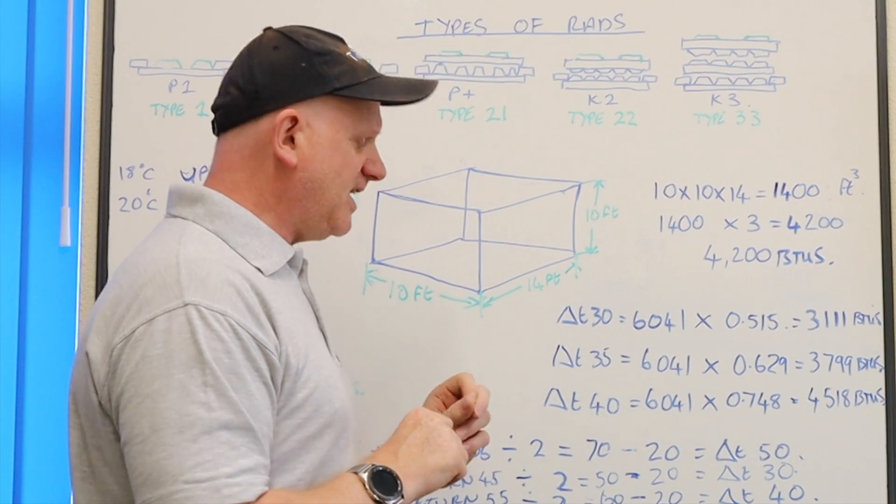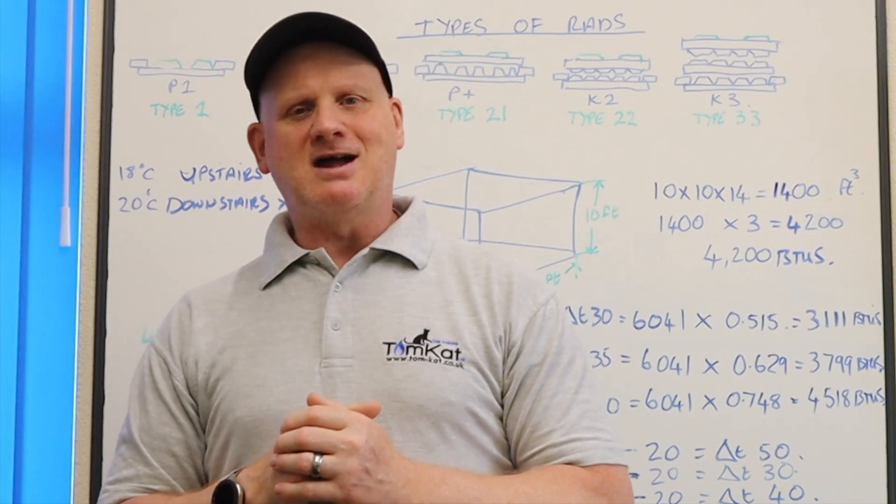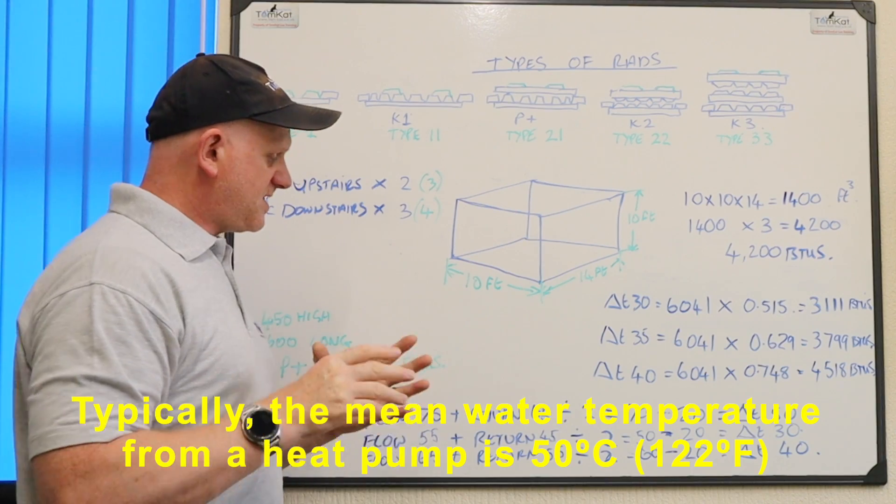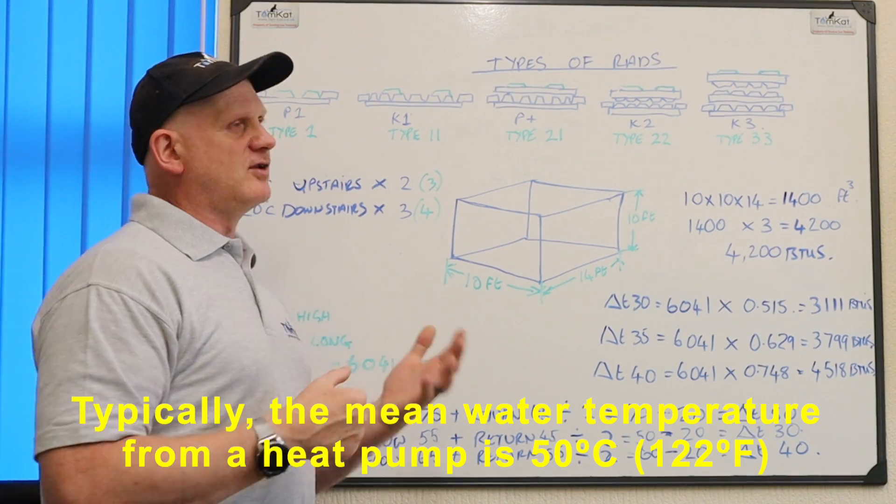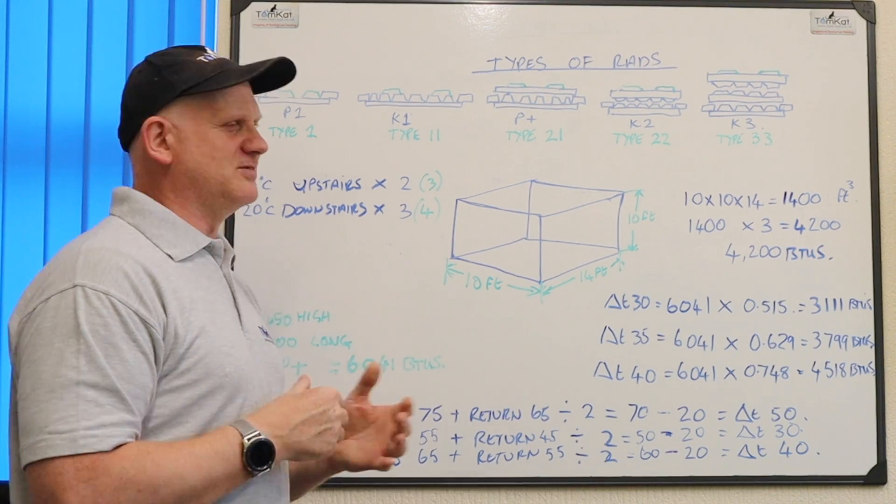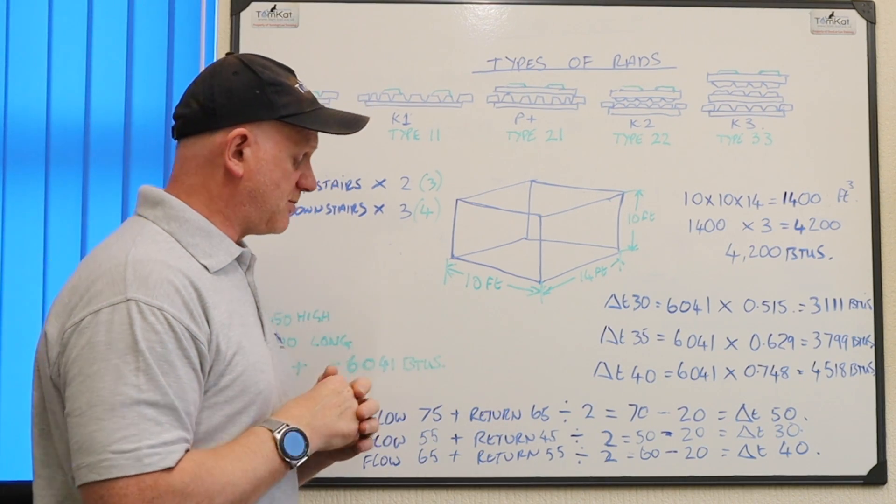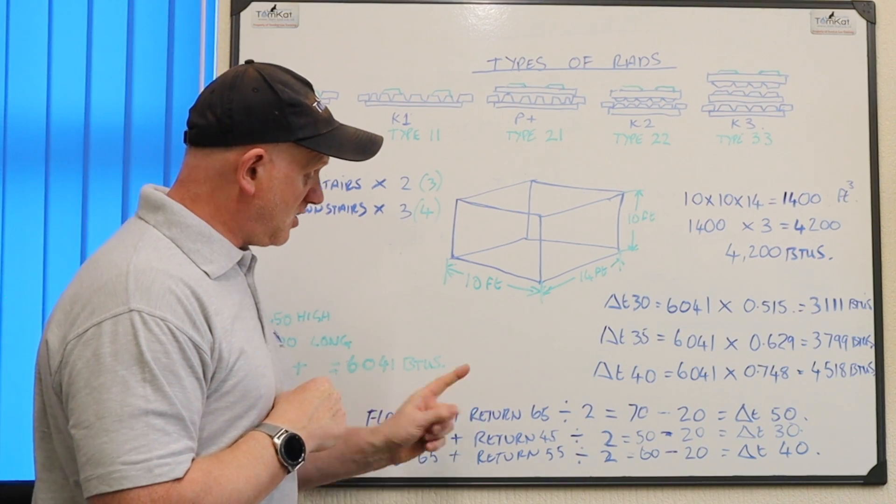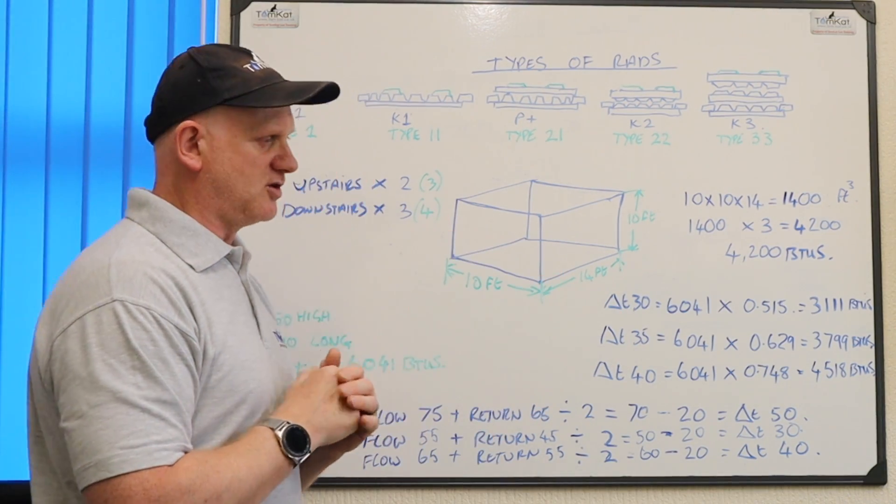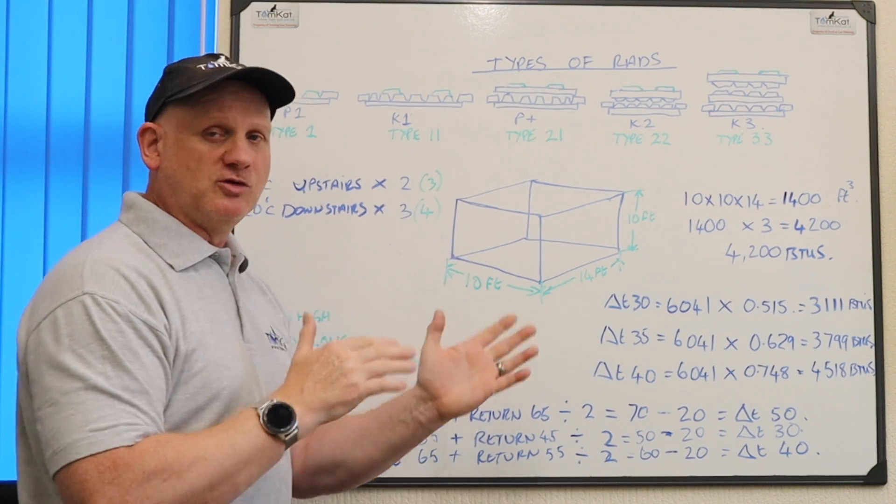So if we do 10 times 10 times 14 it comes to 1400 feet cubed. So if we take this 1400 and we times it by three it gives us 4200. So we've now got 4200 BTUs as a rough guide, because if I was to size this you would all be asleep now because the process is very long and very complicated. But if you are a gas engineer, these videos will be coming soon.